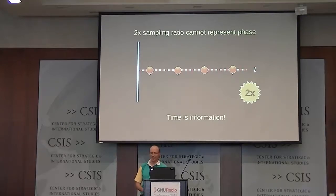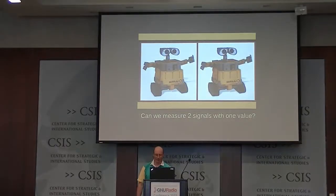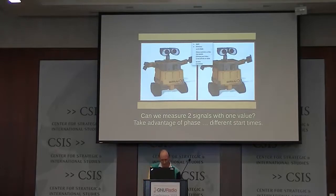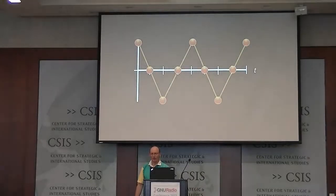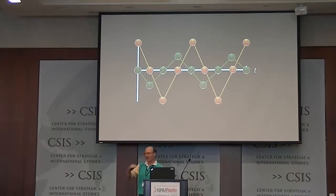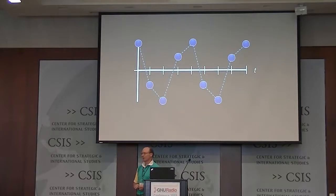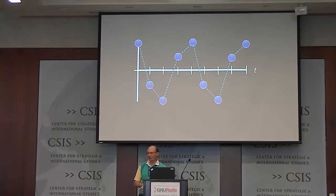Time is information — the time the signal starts is information. So what can we do with that? We can grab two toys and start them at different times. One of them moves a shorter distance, but it still takes the same time to get back and forth. When you plot the path of the first one and the second one, when one device hits the end, the other is right in the middle. We can actually add up the locations of these two devices and turn them into one signal — and it's still unambiguous which one was where and when, because we know when we were sampling each one and what the phase was.